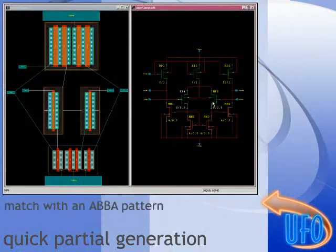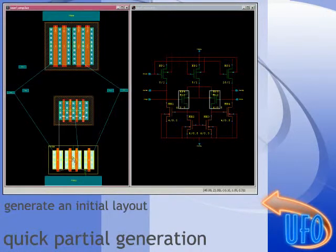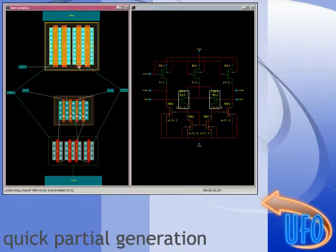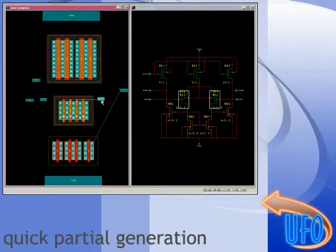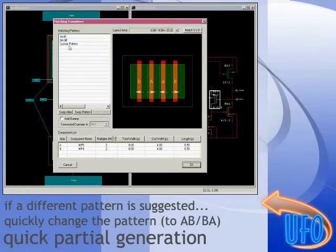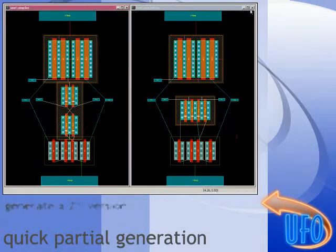Feedback from the designer can have a dramatic impact on your layout. Using partial generation, UFO allows you to quickly regenerate only specific parts of your layout for quick design review and feedback. Multiple layout versions can be quickly created, minimizing layout iterations.